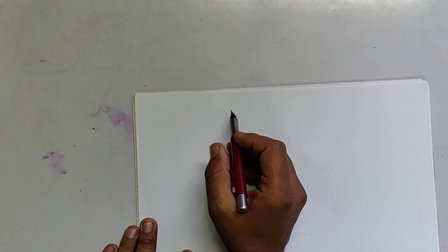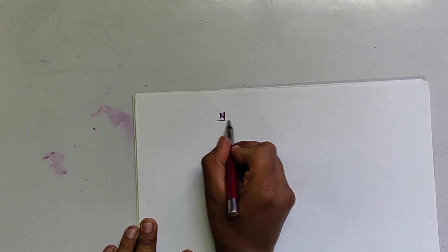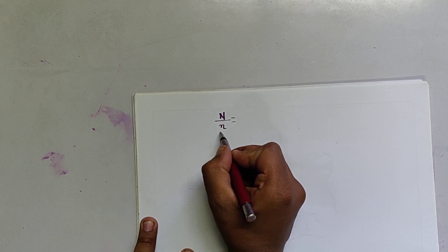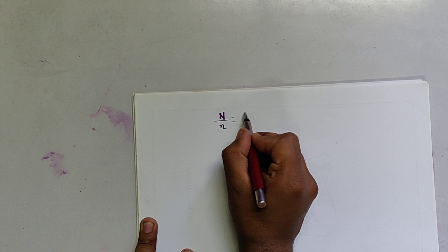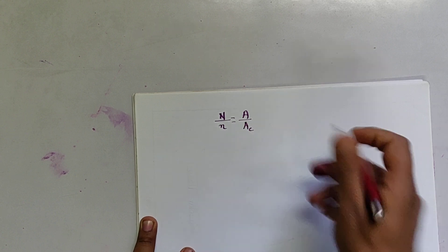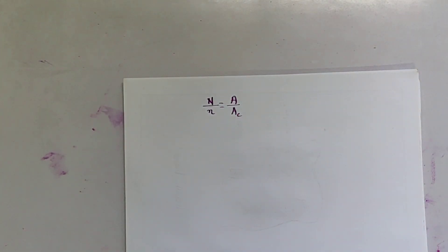Namaste. Today in this video we are going to discuss about finding the value of integration. In the previous video we discussed about the Monte Carlo method to find the value of the area of a circle, where we used the formula: total number of random numbers divided by the acquired random numbers, that means the points going to area of rectangle divided by area of circle to get the integrated value.